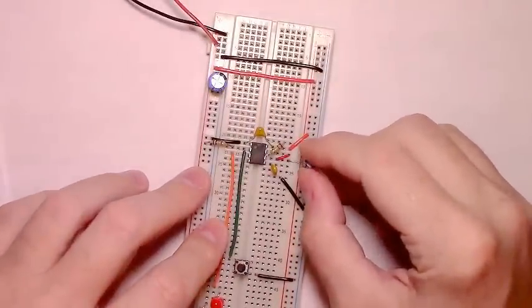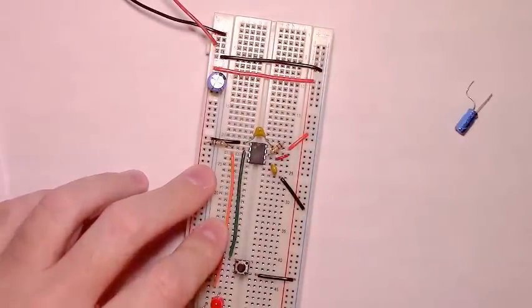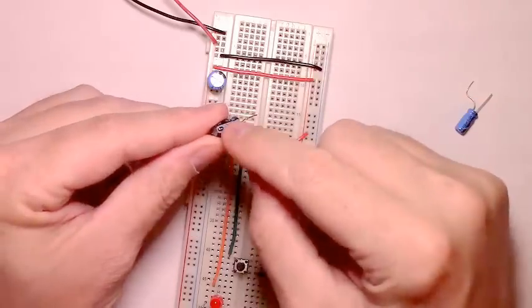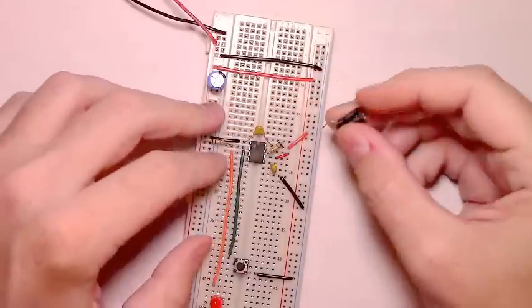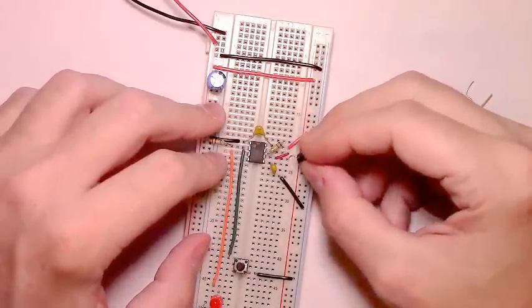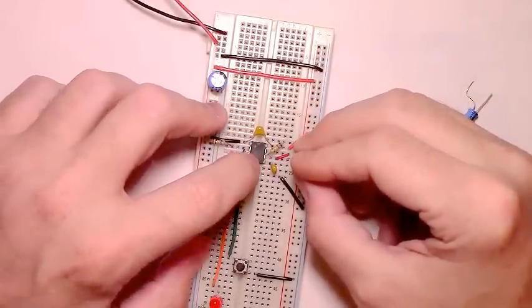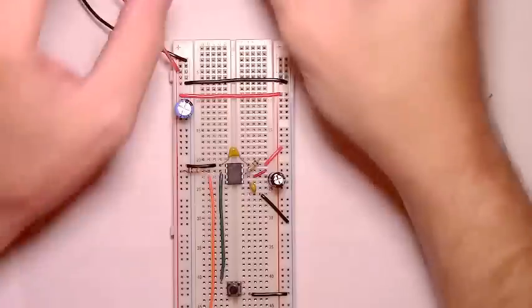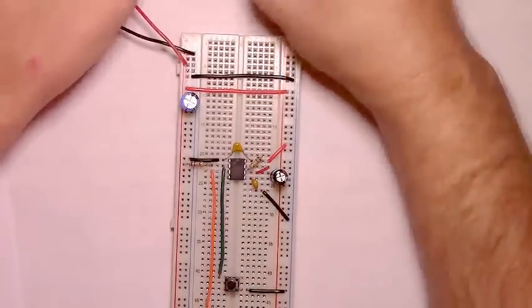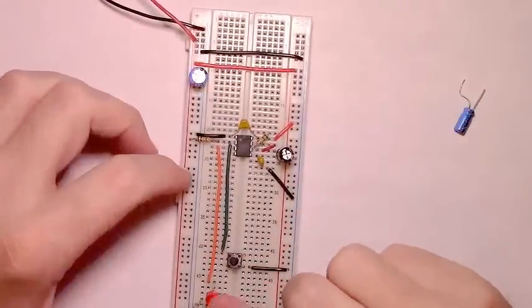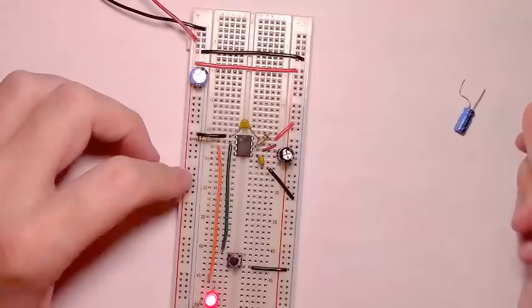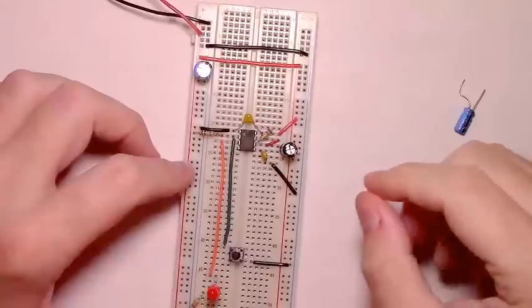To do so, all we need to do is remove that 10 microfarad capacitor and replace it with a 47 microfarad capacitor, making sure to properly align the polarity of the capacitor and connecting it to pin 6. We can add power back to our circuit and push the button. And the LED should stay on for around 5 seconds. And it does. It's around 5. Seems like a little more to me.